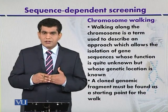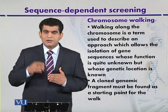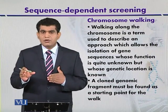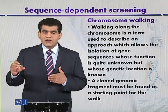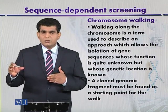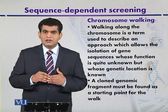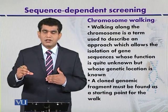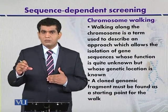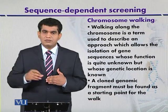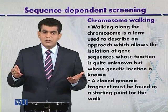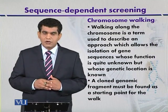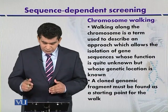When the next DNA fragment is detected, we use that end — which is the second lambda clone — to detect the next fragment. In this way, each newly detected fragment is used as a probe so that we can move along the length of the chromosome. This technique is called chromosome walking.